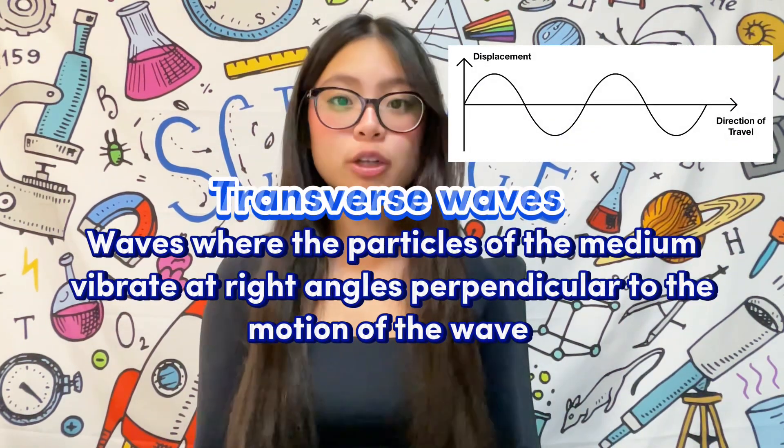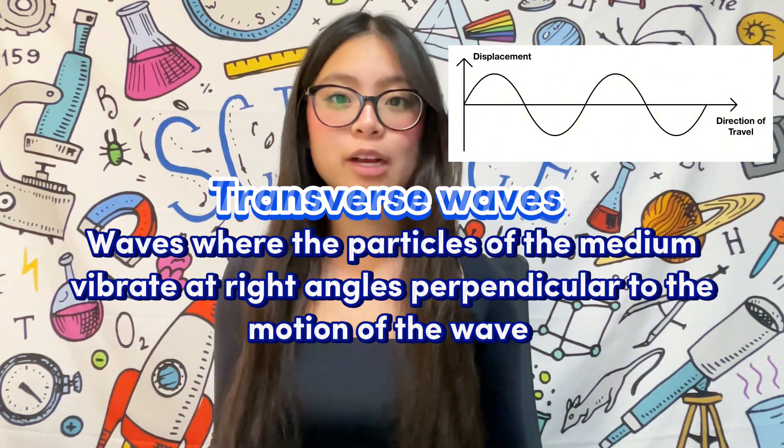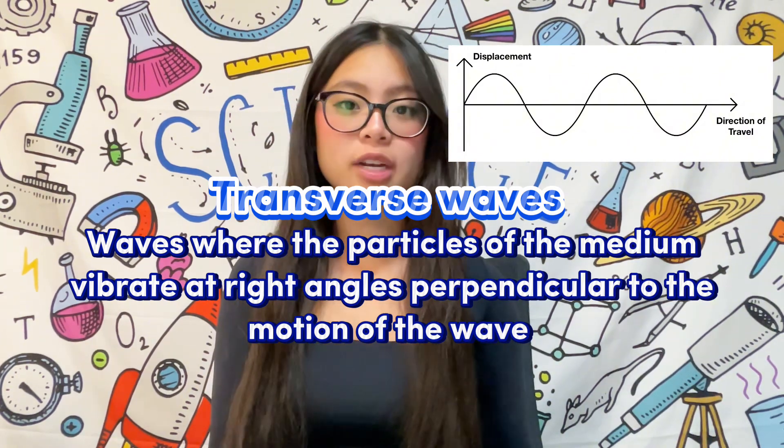Now let's move on to discuss different types of waves. Let's start with transverse waves. Transverse waves are waves where the particles of the medium vibrate at right angles perpendicular to the motion of the wave.